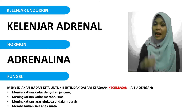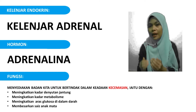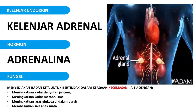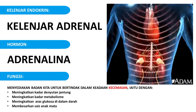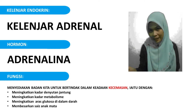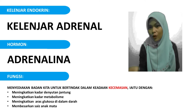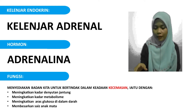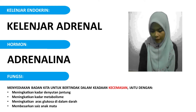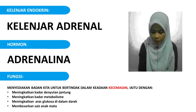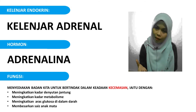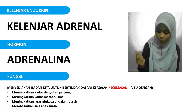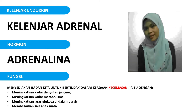Seterusnya kita ada Kelenjar Adrenal. Kelenjar Adrenal berada di bahagian atas ginjal. Fungsinya, dia menghasilkan hormon adrenalina. Kelenjar Adrenal menghasilkan adrenalina - sama seperti kelenjar tiroid menghasilkan tiroksin. Kelenjar Adrenal adalah kelenjar yang berkaitan dengan keadaan kecemasan. Dia menyediakan badan kita untuk bertindak dalam keadaan kecemasan iaitu dengan meningkatkan denyutan jantung, meningkatkan kadar metabolisma, meningkatkan aras glukosa di dalam darah, dan membesarkan saiz anak mata.